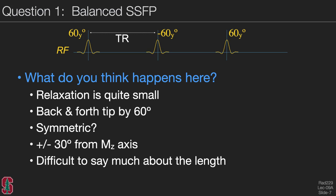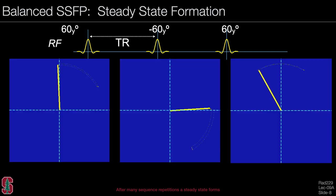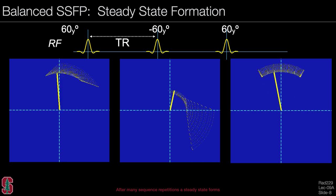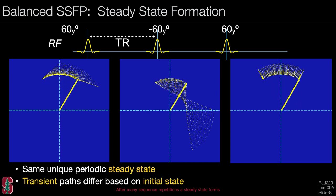Let's look at this example with three different initial states. We have excitation and relaxation, with no precession in these examples. Watch the magnetization as we tip it, starting from three different places. What you see is that the magnetization is evolving towards the same steady state. Regardless of the initial condition, it's going to reach the same unique periodic steady state. However, the transient paths differ based on the initial state.